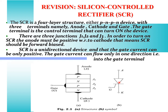In the forward blocking state, when we apply positive supply to the anode, junction J1 becomes forward biased and junction J3 also becomes forward biased. J1 and J3 break into the on condition when the gate pulse is applied.